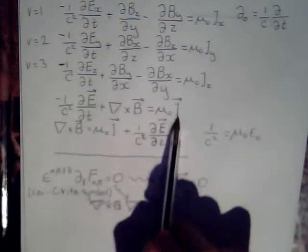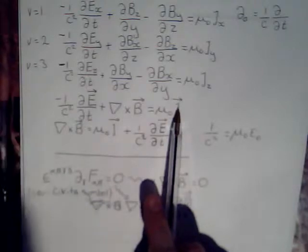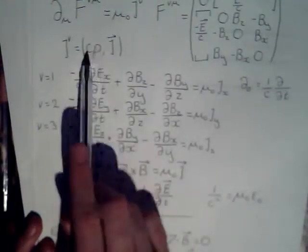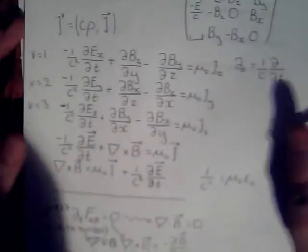Just a note. This here is the current density vector. Three dimensions. Don't confuse it with this four vector. This four vector has the charge density times C, and then the three components of current density. Don't confuse these two.